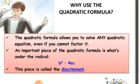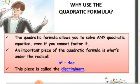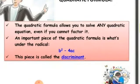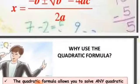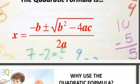An important piece of the quadratic formula is what's under the radical — it's called the discriminant.